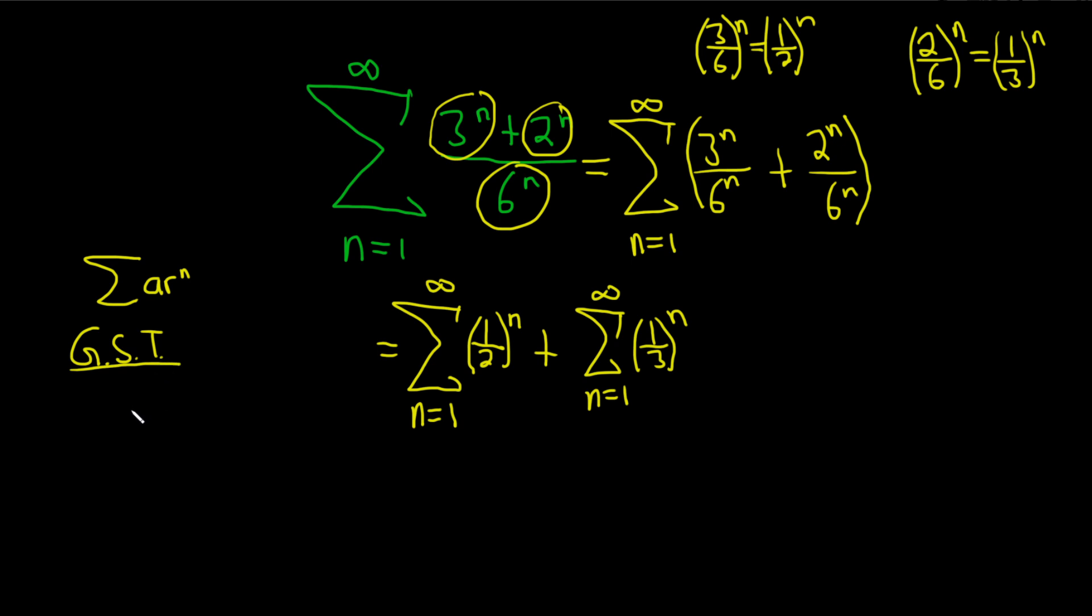GST says if the absolute value of r is less than 1, then we have convergence of the infinite series. If the absolute value of r is greater than or equal to 1, then we have divergence of the infinite series.